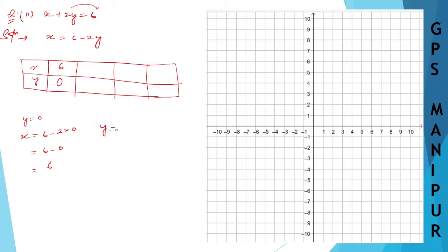When y equals 1, x will equal 6 minus 2 times 1. So 6 minus 2 is 4. When y is 1, x is 4.